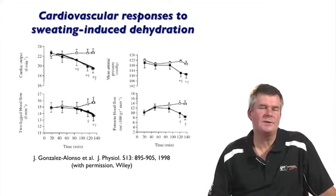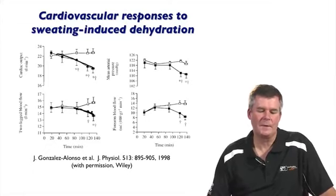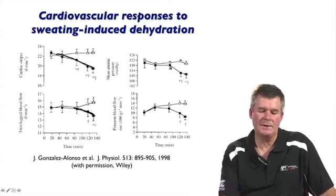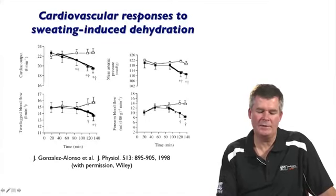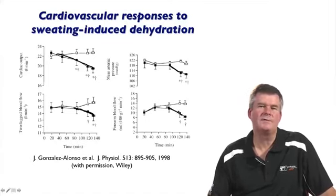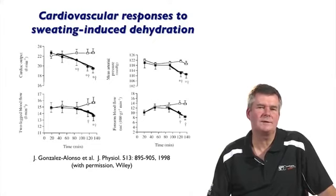It's really the combination of hyperthermia and dehydration during prolonged exercise that begins to challenge muscle blood flow. Mean arterial pressure drops slightly towards the latter stages of this type of exercise. The forearm blood flow, often used as a proxy for cutaneous blood flow, will also drop off. So the loss of fluid, although important for dissipating heat, has challenges to the cardiovascular system.